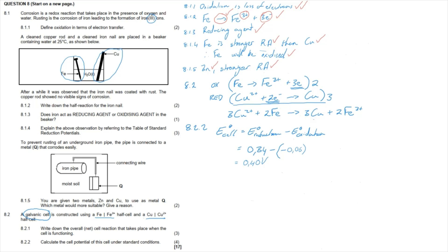Marking guidelines continued: 8.2.1 — marks for balancing the equation, with Cu²⁺ ions reacting with Fe to form Cu atoms and Fe³⁺ ions, and one mark for correct balancing by comparing electrons in each half-cell. 8.2.2 — one mark for writing the formula from the formula sheet, one mark for identifying each half-cell potential, and one mark for the final answer of 0.40 V with correct units.